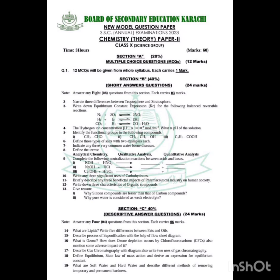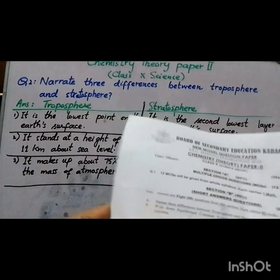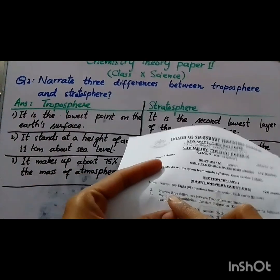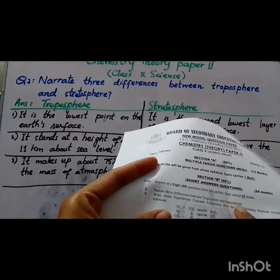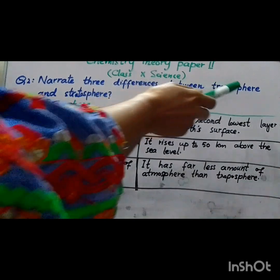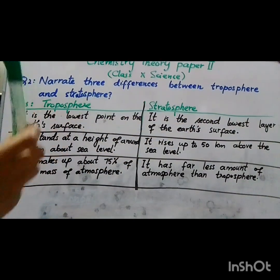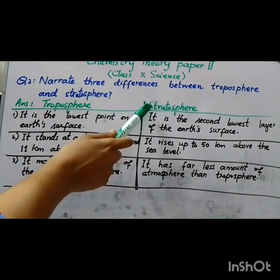Today I will tell you the solution to the short question answers — how many questions to solve in each section and how many marks are in your paper. The first solution I will provide today is the 3 differences between the troposphere and stratosphere. You will write 3 differences in two columns.